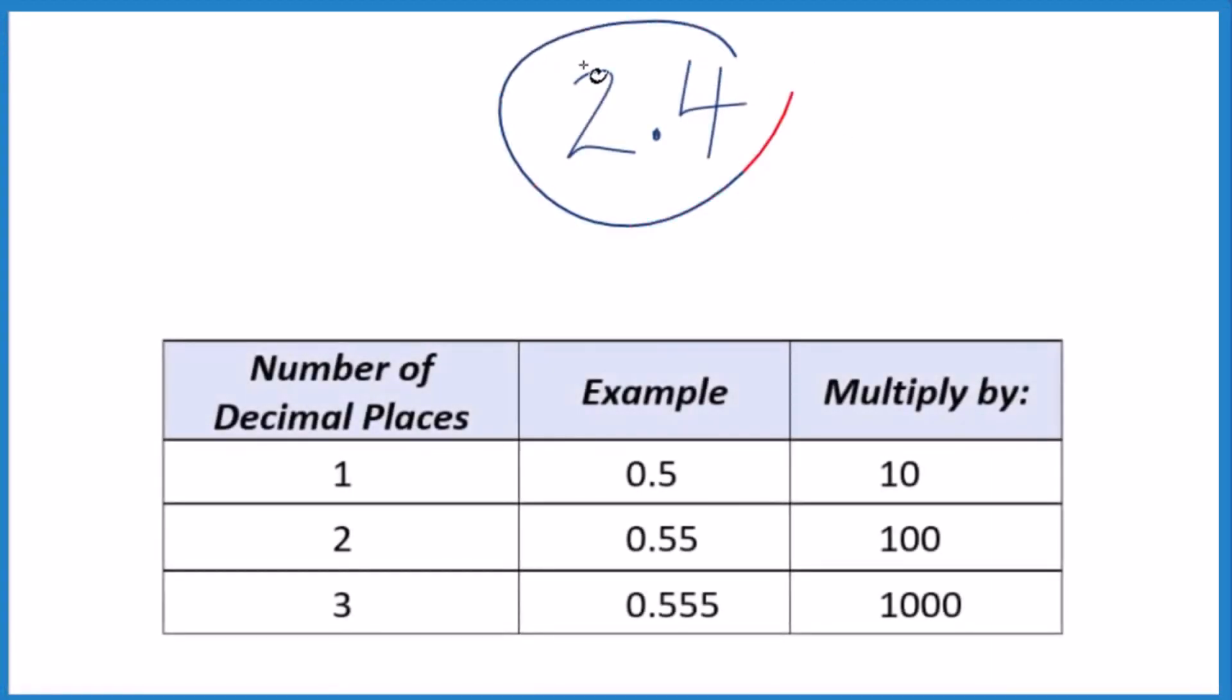If you're asked to write the number 2.4 as a fraction, here's how you do it. Let's call this 2.4 over 1. Since we're dividing by 1, it doesn't change anything. It's still 2.4. Now we have the start of a fraction.